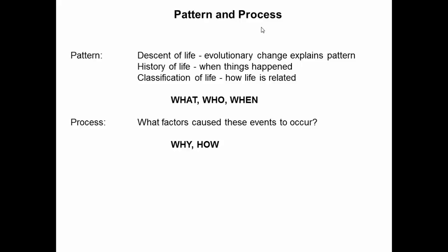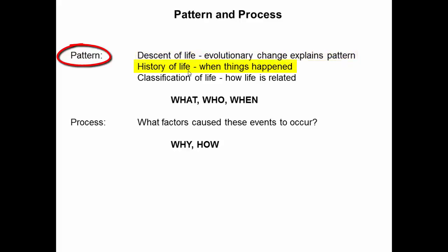The evolution of life on Earth, we can think of it as having a pattern and a process. So what's the pattern of the history of life on Earth? Well, the descent of life. Evolutionary change explains the pattern — the history of life, when things happened, and classification of life, how life is related.